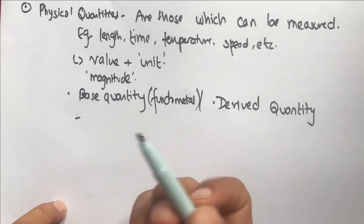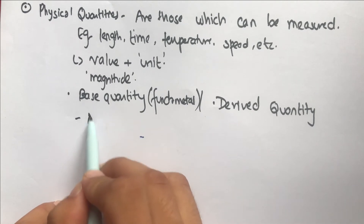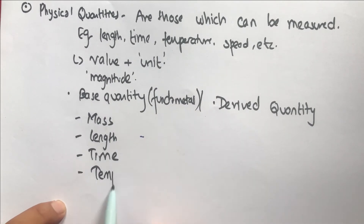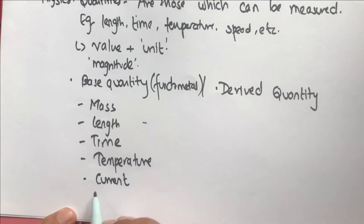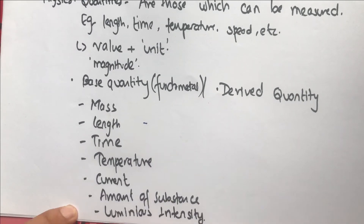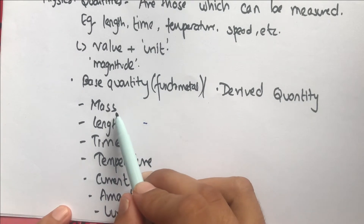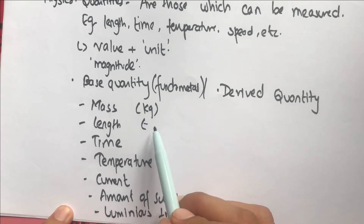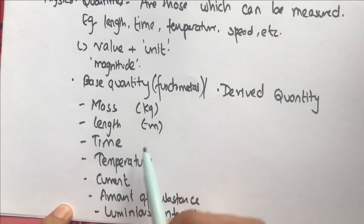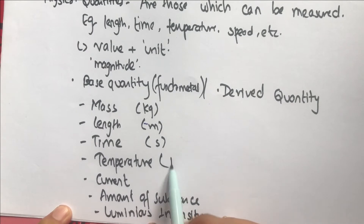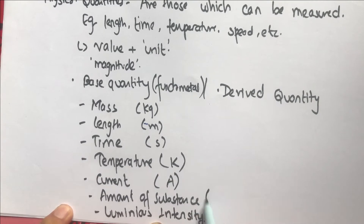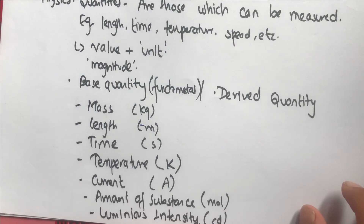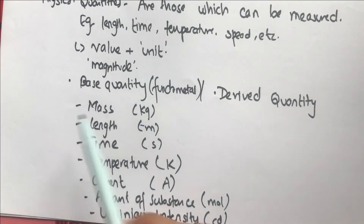There are seven base quantities — let's write them out. Mass, with unit kilogram. Length, with unit meter. Time, with unit seconds. Temperature, with unit kelvin — not 'degree kelvin,' just kelvin. Current, with unit ampere. Amount of substance, with unit mole. Luminous intensity, with unit candela (cd).